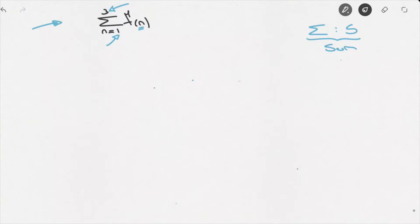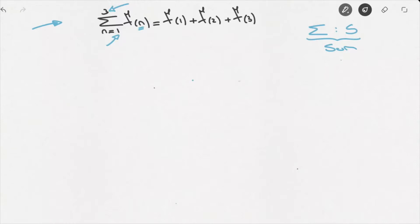Here's what that would look like. This would equal f(1), corresponding to the case where n equals 1, the initial value, plus f(2), corresponding to the case when n equals 2, plus f(3), which corresponds to the final value written at the top of the sigma symbol.